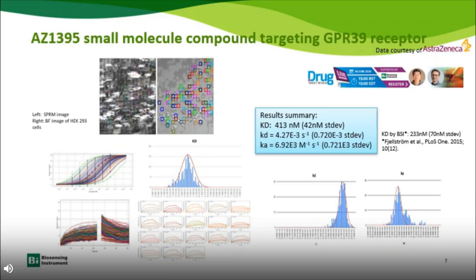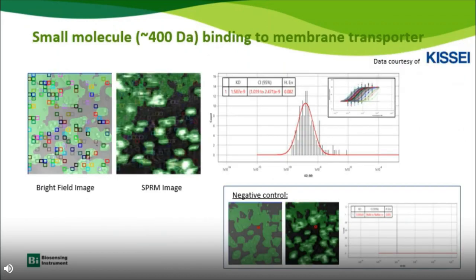The binding affinity obtained is about 400 nanomolar, with corresponding kon and koff values. This molecule is well studied by AstraZeneca; a result reported in the literature using backscattering interferometry (BSI) gives a value of about 233 nanomolar, which agrees very well with our measurement. Below is another small molecule example binding to a membrane transporter, data from Casing. In this experiment, a positive binding and a negative control sample were tested. For the positive experiment, nice binding data was obtained, while for the negative control, essentially no binding was observed on the cell.